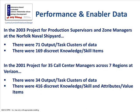As a reference point: for the Norfolk Naval Shipyard, there were 71 outputs with clusters of task data and gap analysis, and 169 discrete knowledge and skill items across fewer than 17 categories. For the Verizon call center, there were 34 outputs but 416 discrete knowledge and skill items — fewer outputs but more knowledge and skills. The data varies considerably by project.